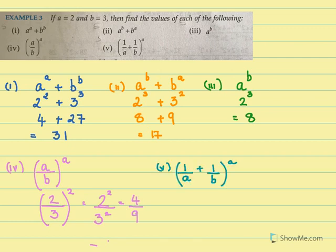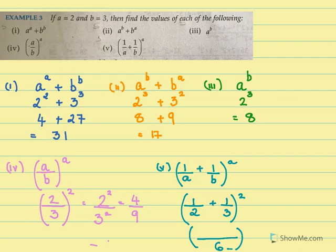For the fifth one, it is 1 over A plus 1 over B, whole thing raised to 1 over A. A is 2 and B is 3, so the whole thing is raised to 2. Here in the bracket we need to take the LCM, and the LCM is 6. For 2 to become 6 we multiply by 3, and for 3 to become 6 we multiply by 2. So we will have 3 plus 2 raised to 2, which is 5 over 6 raised to 2. 5 raised to 2 is 25, and 6 raised to 2 is 36.